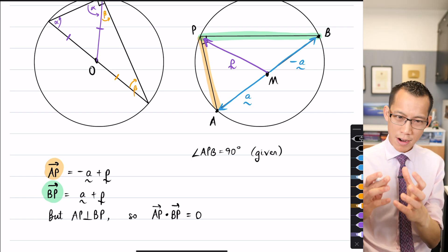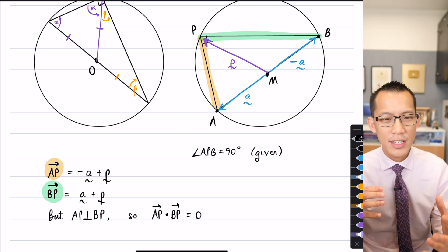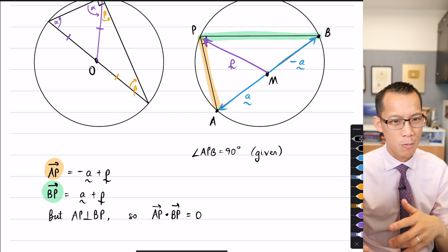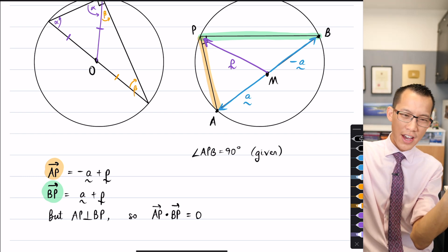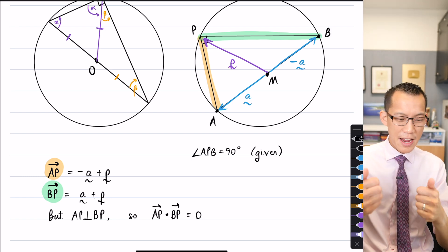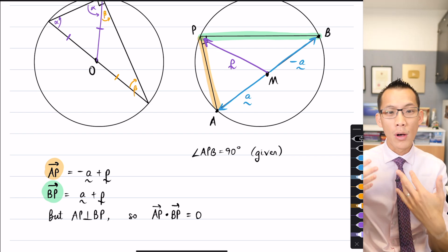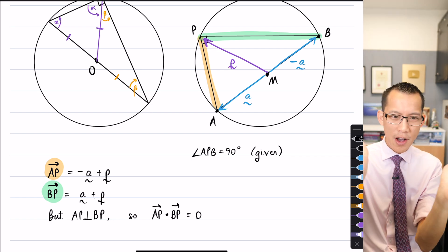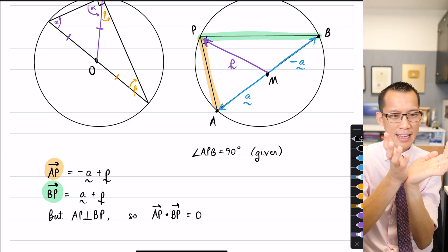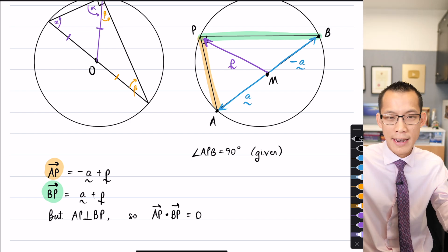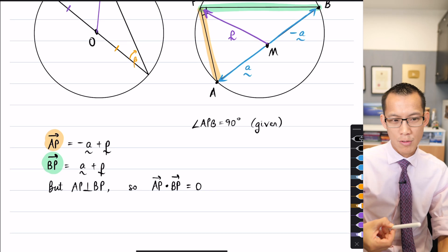Because the dot product, if you think back, the dot product is how are these vectors working together with each other. If they're pushing against each other, you get a negative dot product. If they're going in the same direction, you get a positive dot product. But when they're perpendicular, they're not working with or against each other. They're just kind of off in independent directions. So that's why it's zero.